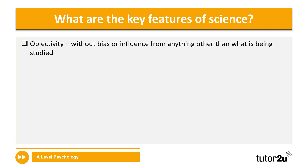The first key feature of science is objectivity — researching or conducting studies without the influence of any bias, emotions, or assumptions. This is a key feature of science since it avoids all the flaws associated with subjectivity. However, do bear in mind the question about whether true objectivity is possible; for example, putting great effort into trying to be objective could itself reduce objectivity.